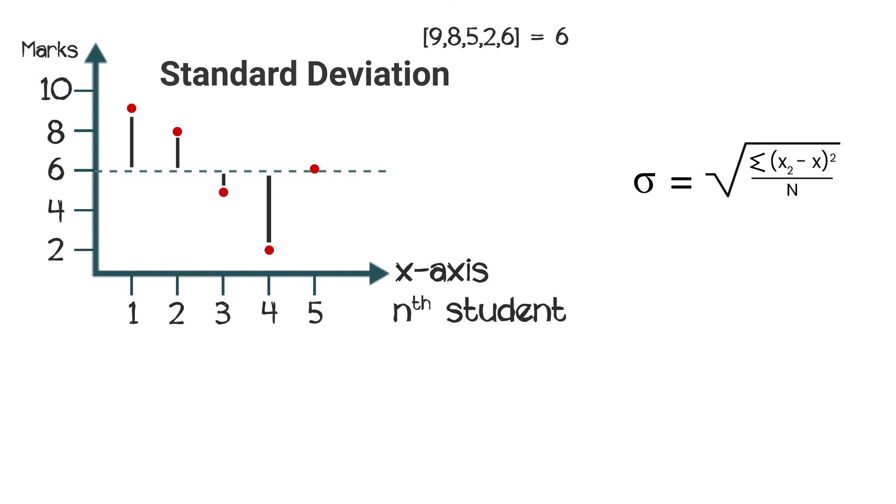So this would mean that the standard deviation would be square root of square of 9 minus 6, 9 minus 6 is 3, so square of 3 plus 8 minus 6, 2 square of 2 plus 5 minus 6 that is minus 1, so square of minus 1, 2 minus 6 minus 4 and 6 minus 6, 0. So square of all this and then sum it all and then divided by the total number of observations that is 5. So this would turn out to be square root of 3 square is 9, 2 square is 4, minus 1 square is 1, 4 square is 16.